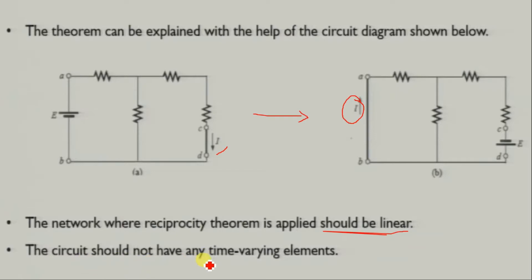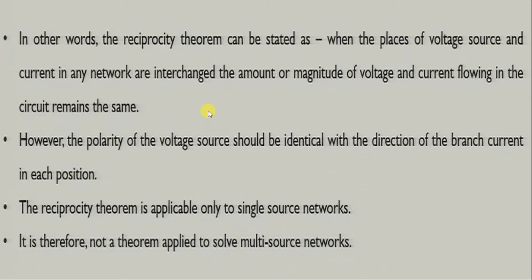The circuit should not have any time-varying elements. Here there is no time-varying element — there is a DC source, and inductors or capacitors have no time-varying quantity. Since there is no time-varying quantity, we can use the theorem.